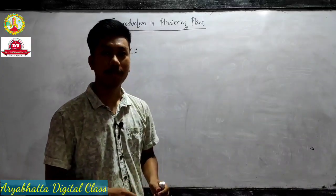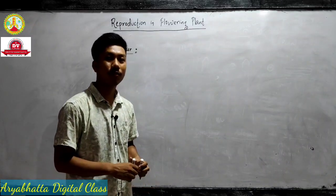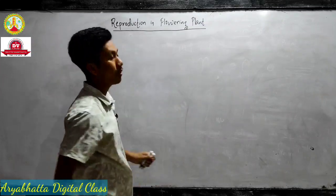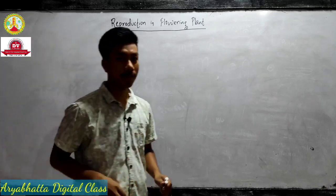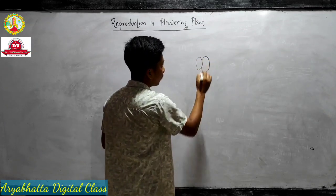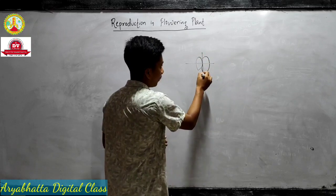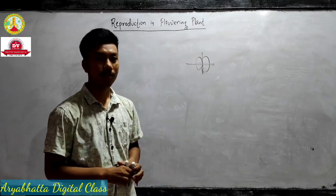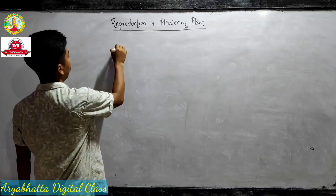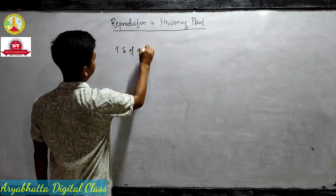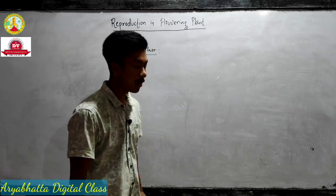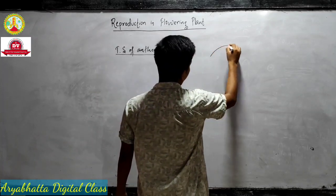Welcome back. In this video lecture we will talk about the detailed structure of the anther. To see the internal structure of the anther we have to do a TS — transverse section. We have to cut this way, not that way. This cut is known as TS, transverse section. So now we will see the detailed structure of the anther.